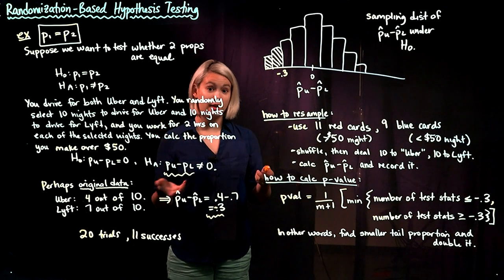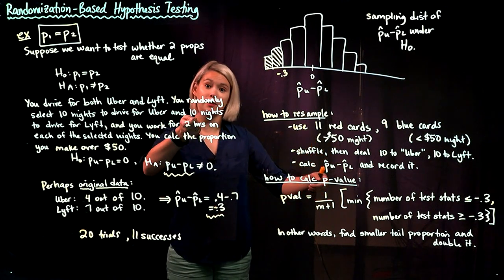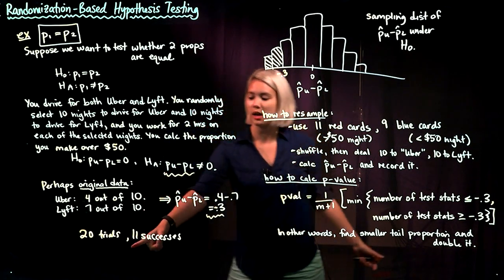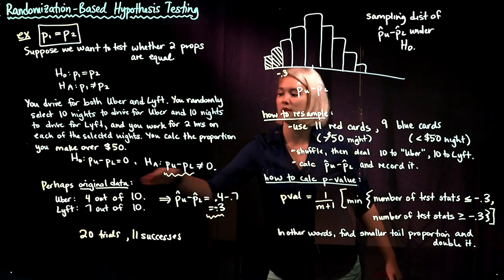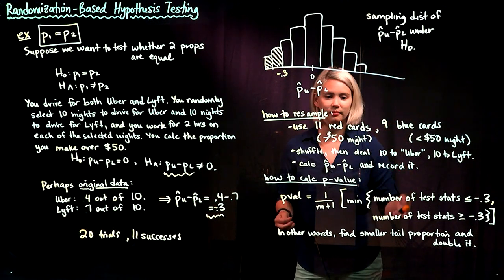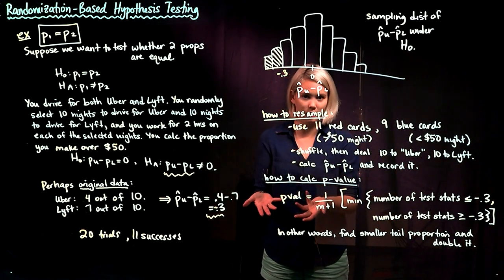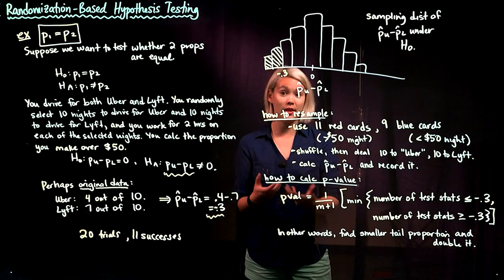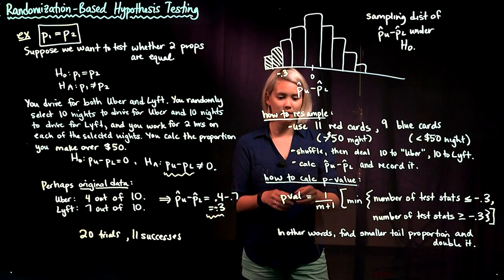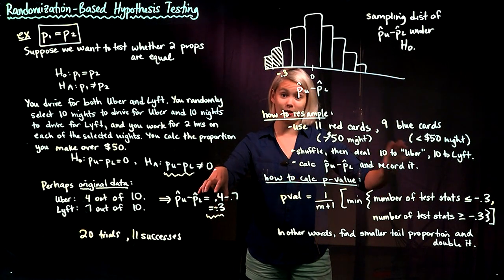We can take out cards — 11 red cards to represent making more than $50 in a night, and 9 blue cards to represent making less than $50. Since we had 11 nights total where we made more than $50, we have 11 red and 9 blue cards. We shuffle all 20 cards, deal 10 to Uber and 10 to Lyft.